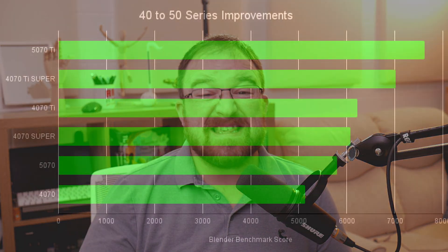The 5070 Ti is looking like a meager uplift from the past generation, and the four different variations of the 4070 family will cause a lot of confusion for people looking to upgrade. From the 4070, it represents a reasonable 48% improvement. The 4070 Super, around 25%. The 4070 Ti, 22%. But that Ti Super — only 8%.